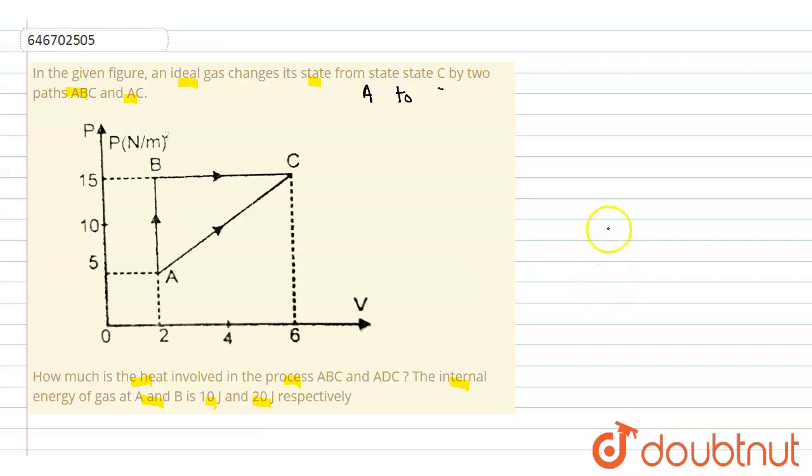Q_AB is equal to ΔU_AB plus W_AB. Here, ΔU means change in internal energy.